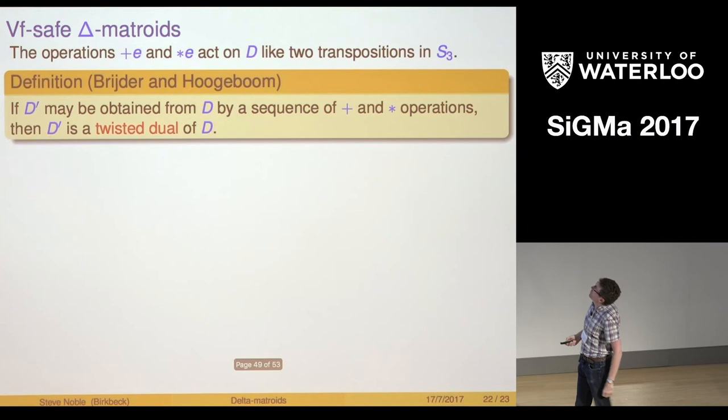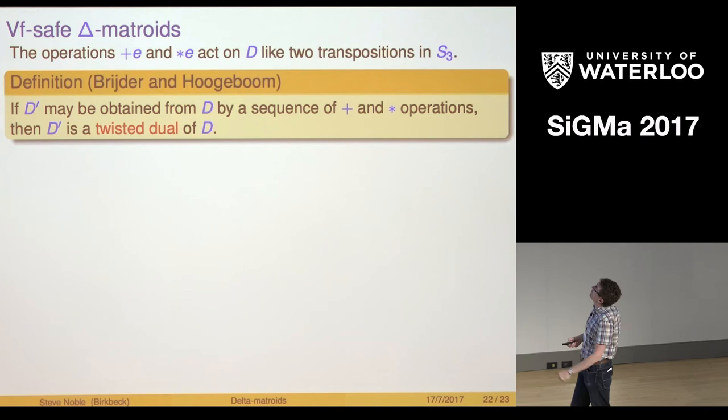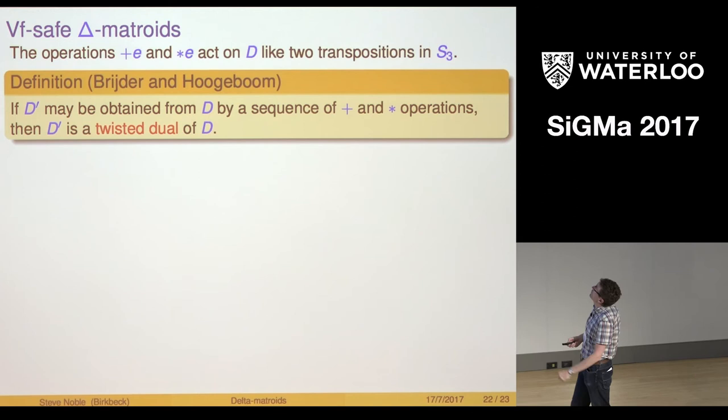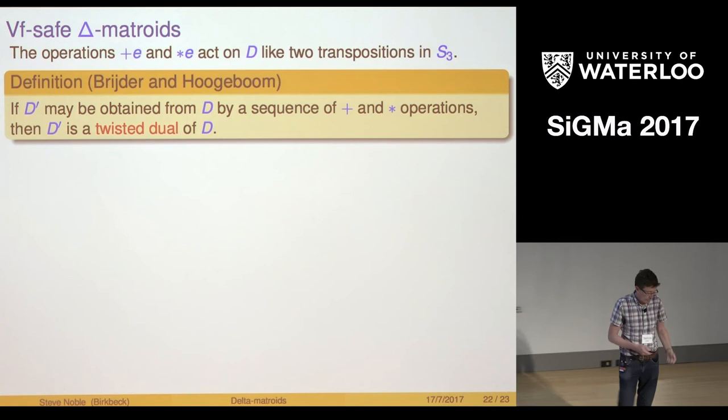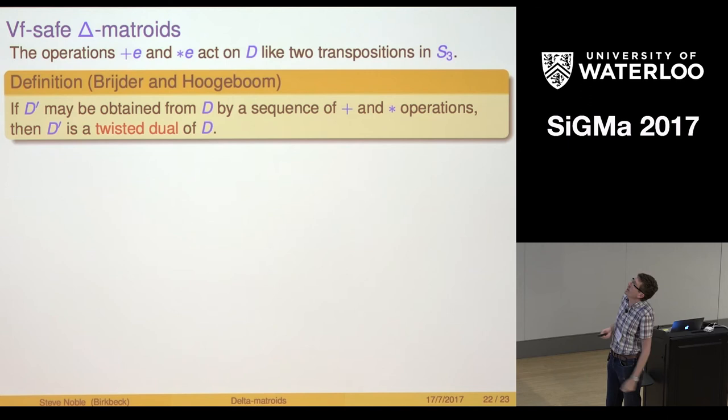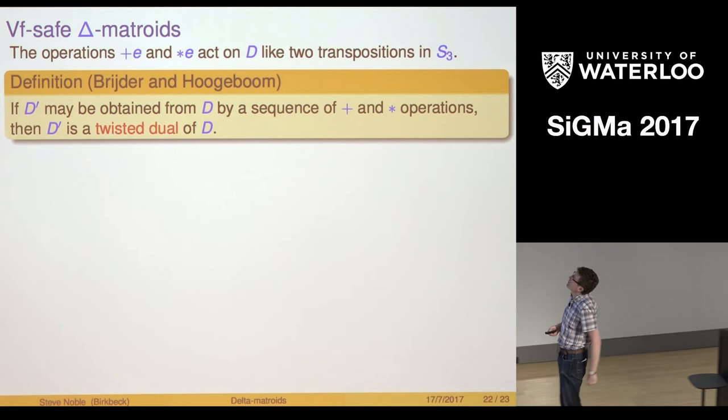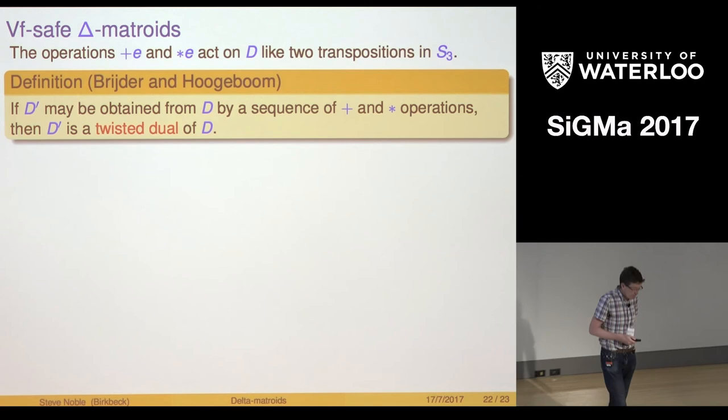Very last thing. If we think of how the operations of doing one loop complementation, one partial dual, and maybe a sequence of those on the same edge, how do they work? They work like two transpositions in S3, so I get potentially six different delta matroids by doing a sequence of these things. In particular, on a particular edge, they don't commute.